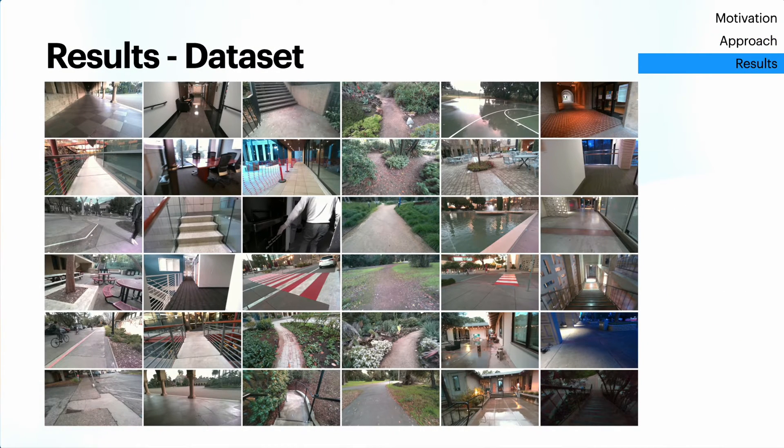To rigorously test our approach, we collected a brand-new egocentric navigation dataset. This dataset includes 34 collections of first-person video from a variety of indoor and outdoor environments, ranging from cluttered offices to busy city streets. It also includes global 3D trajectories and rich sensor data. We plan to release this dataset to the community to spur further research.